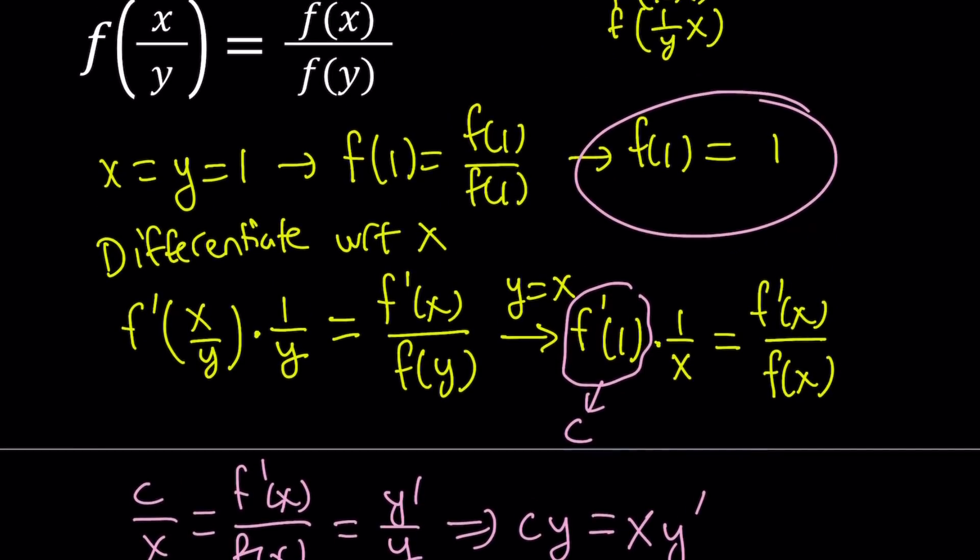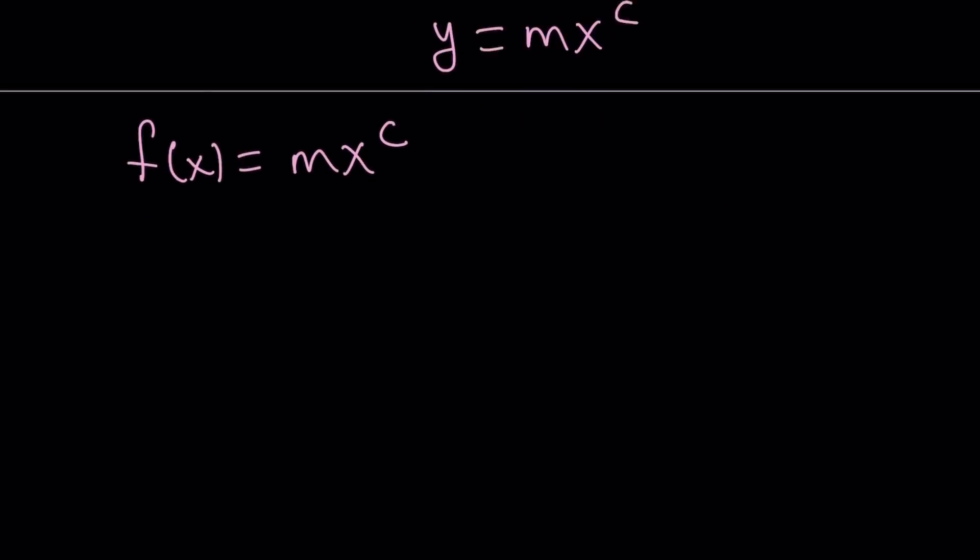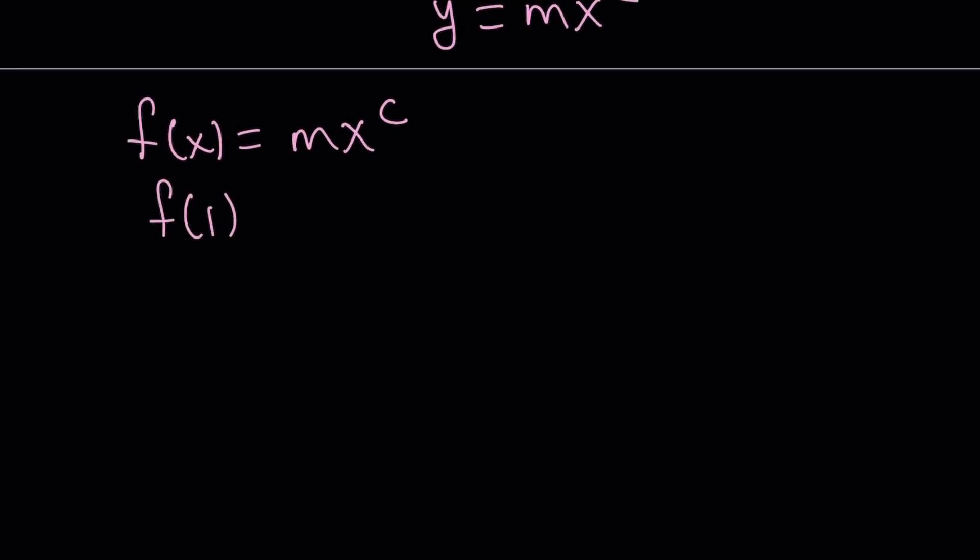So this is our function f of x. We can write f of x as m times x to the power c. But we don't know what m is. But we can easily evaluate that because we know that f of 1 is equal to 1.